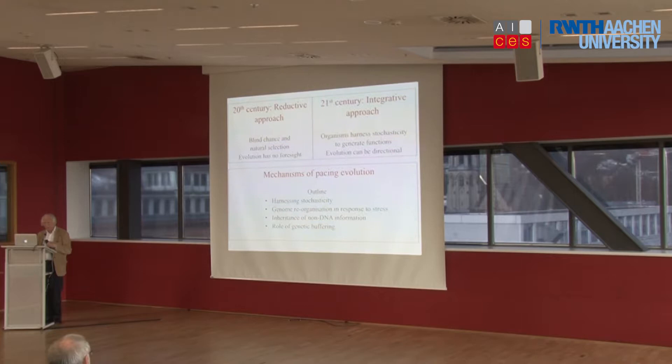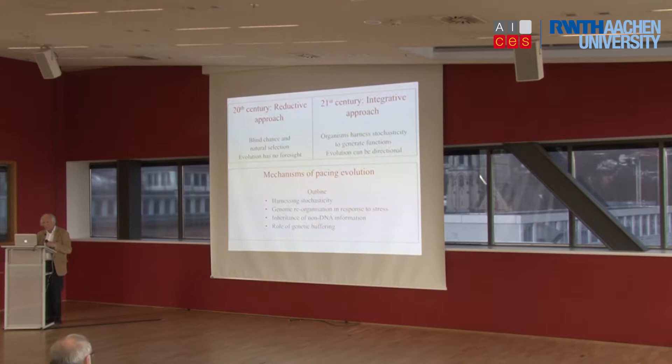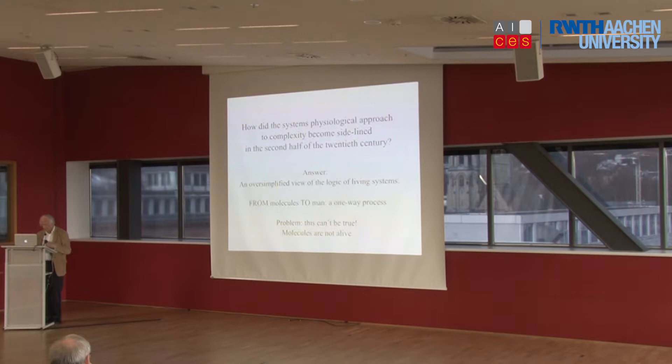I'll divide this into four parts: first I will justify that point about harnessing stochasticity; then talk about how that is used to reorganize genomes; then another way in which evolution can be speeded up, which is the inheritance of acquired characteristics; and then I will return to the role of what we can call genetic buffering, because that is what gives rise to the robustness.